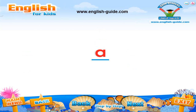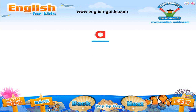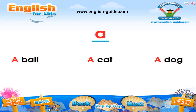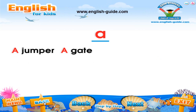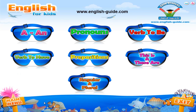But if the word begins with a consonant, which is all the other letters in the alphabet, we use the word 'a' before it. For example: a ball, a cat, a dog, a jumper, a gate, a house, a fan, a kite.